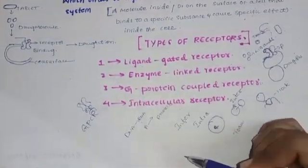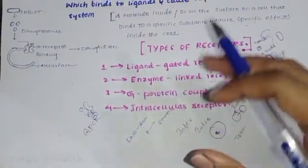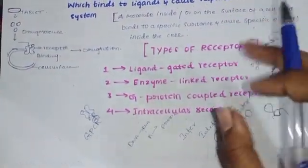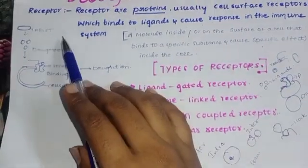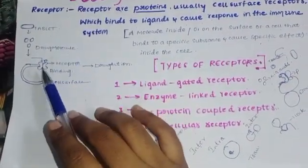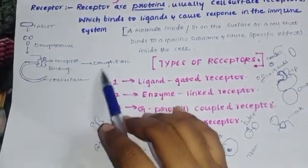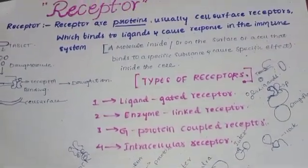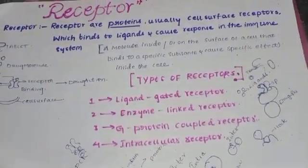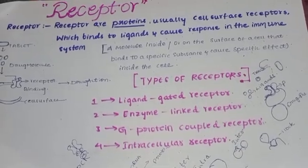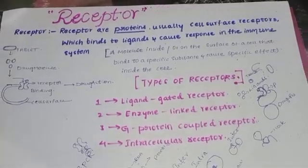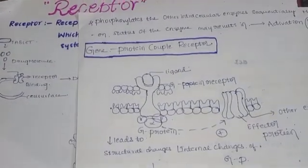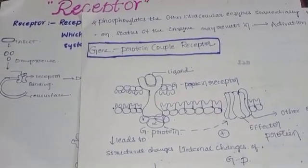A drug molecule can bind to multiple receptors — this is receptor binding — and drug action is obtained. These are the types of receptors, and the next video will explain the receptor mechanism completely. I hope this simplified it. Thank you.